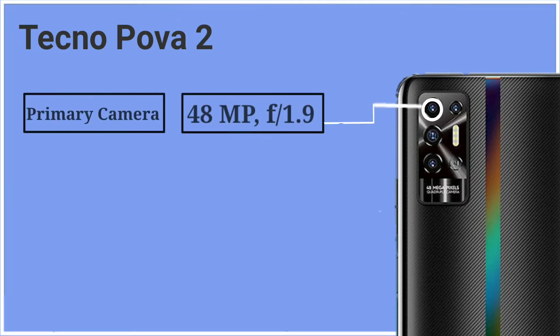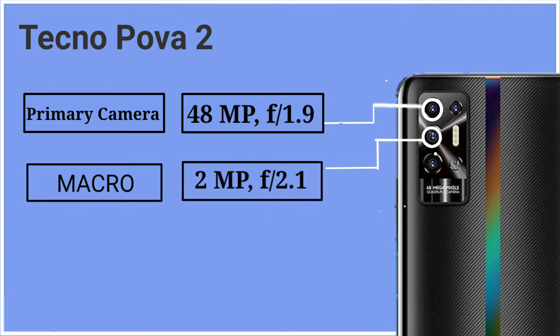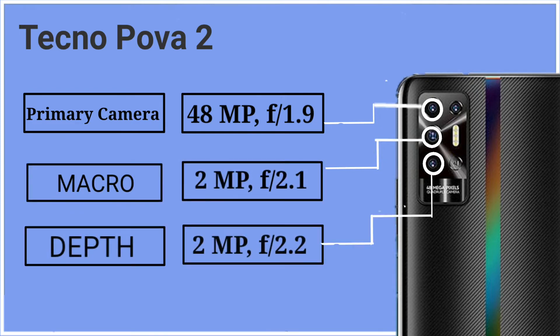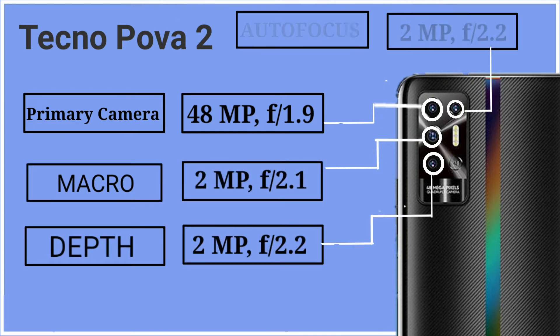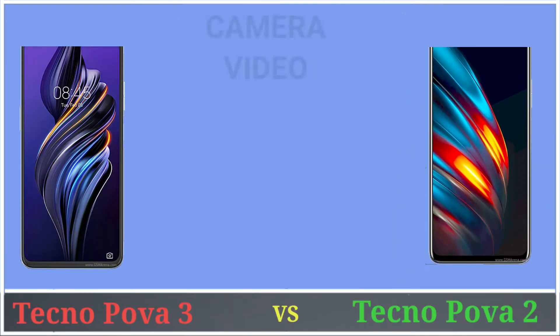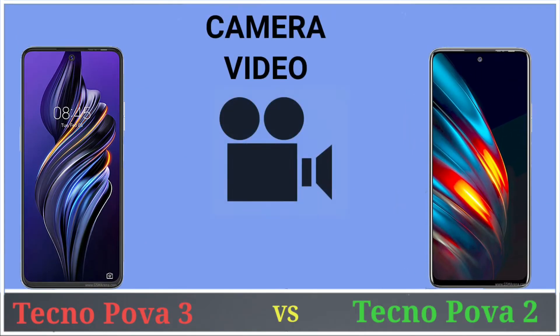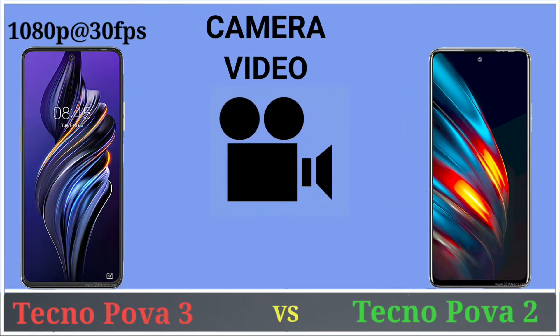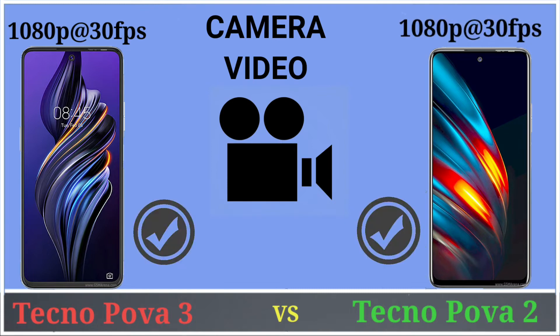Tecno Pova 2 has a quad camera setup. Its primary camera is 48 megapixels, aperture f/1.9; macro camera 2 megapixels, aperture f/2.1; depth camera 2 megapixels, aperture f/2.2; and quad LED flash. For video recording, both Tecno Pova 3 and Tecno Pova 2 can record 1080p video at 30fps.